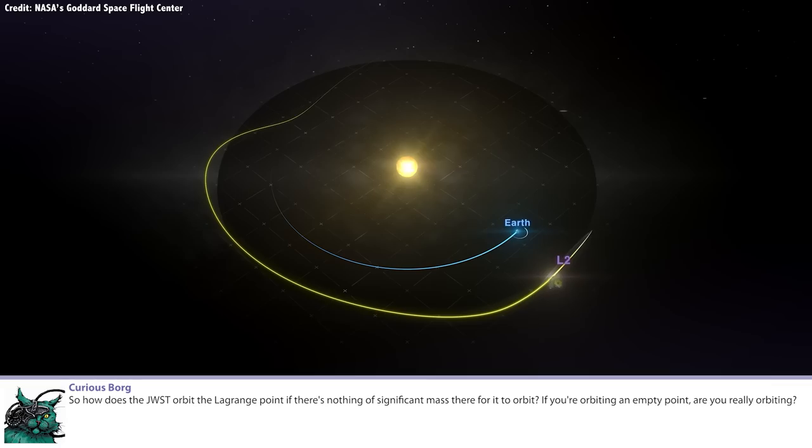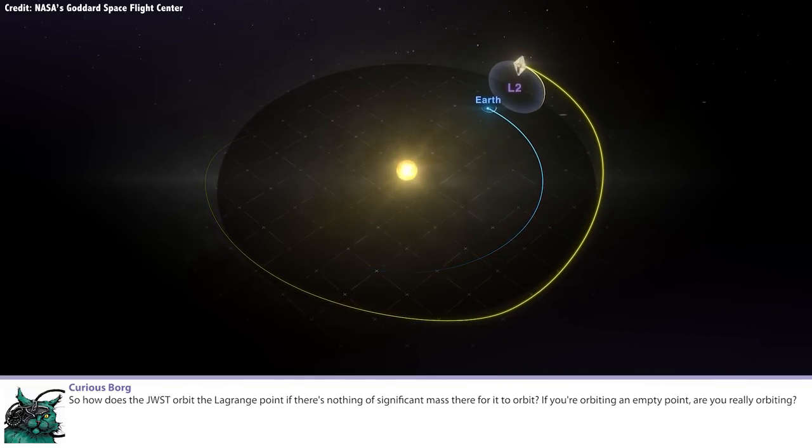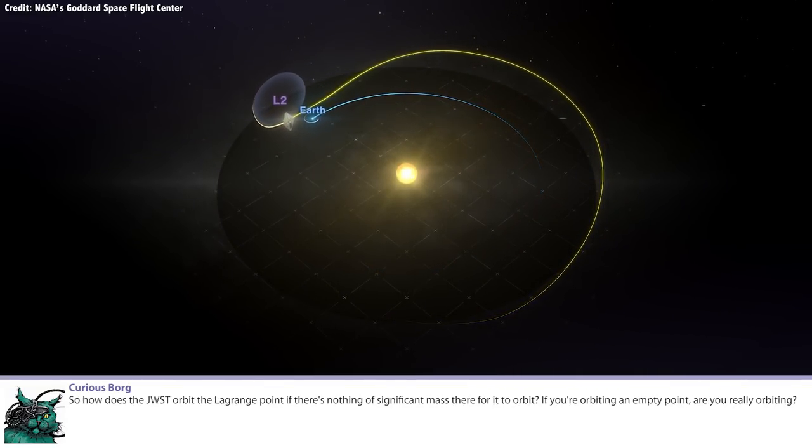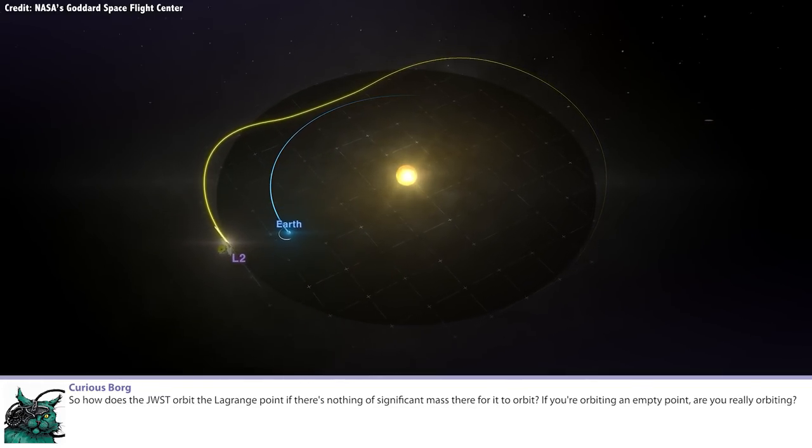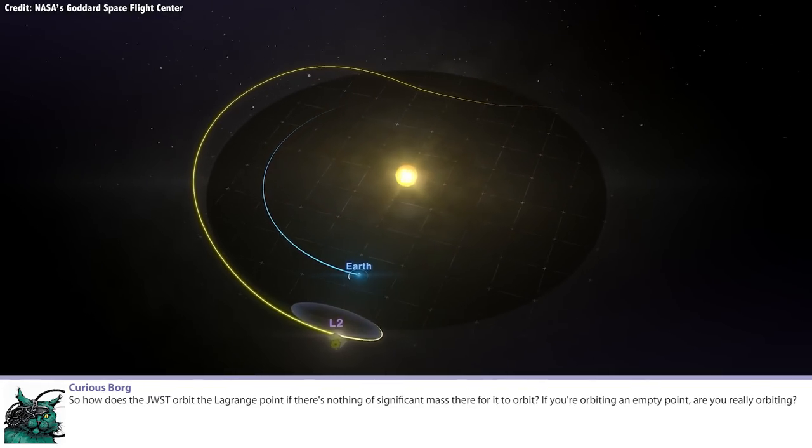Curious Borg. So how does James Webb orbit the Lagrange point if there's nothing of significant mass there for it to orbit? If you're orbiting an empty point, are you really orbiting? Lagrange points. Oh, write that on my tombstone. Okay.